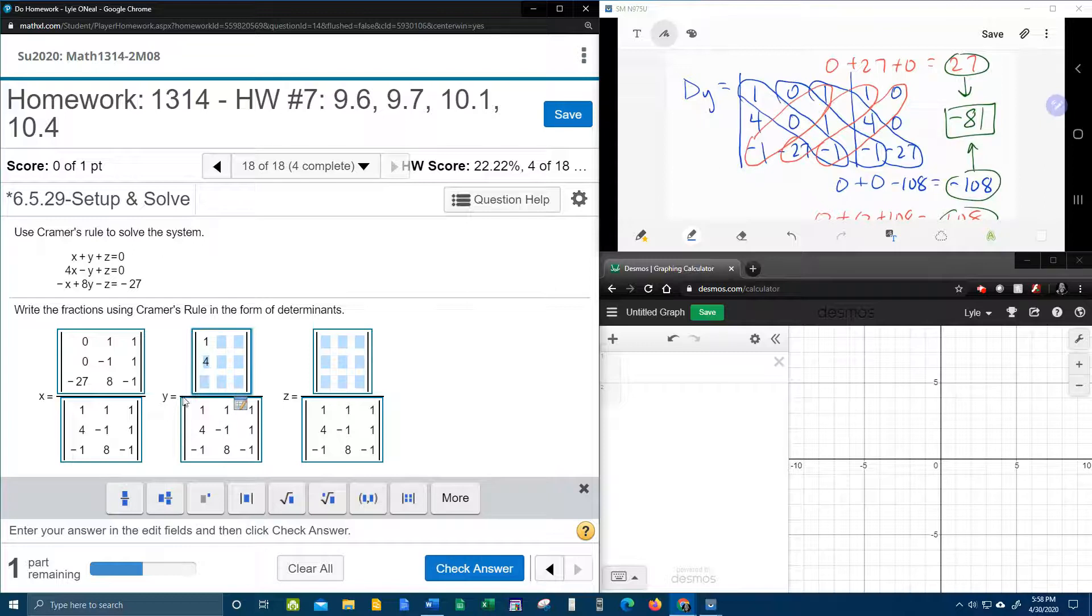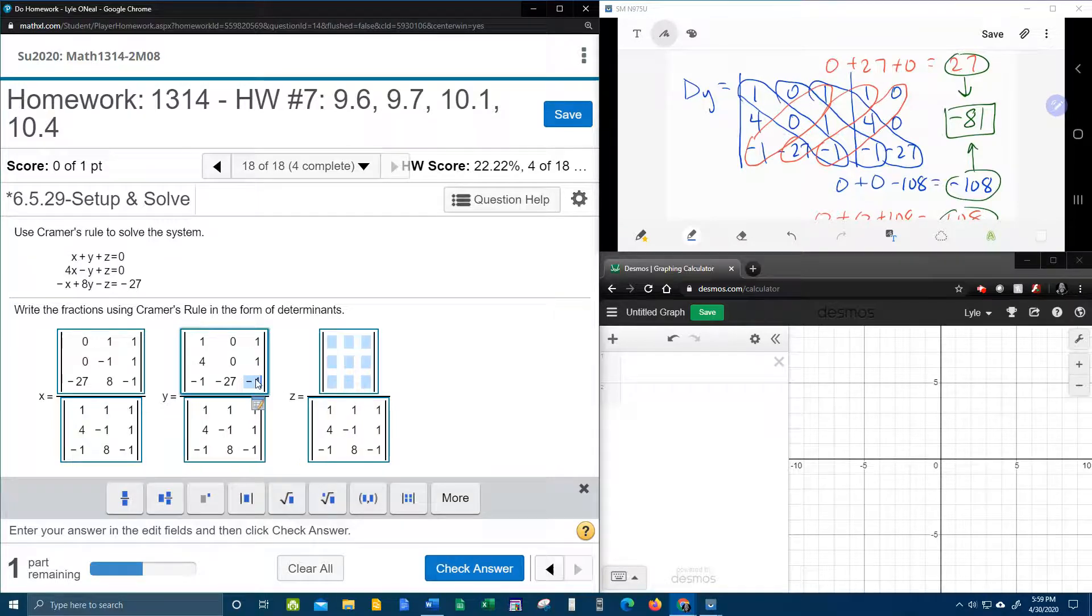D sub y, now we're doing D sub y, which I have pulled up here. 1, 4, negative 1. Middle column, 0, 0, and negative 27. And, 1, 1, negative 1. All right, one more time here.